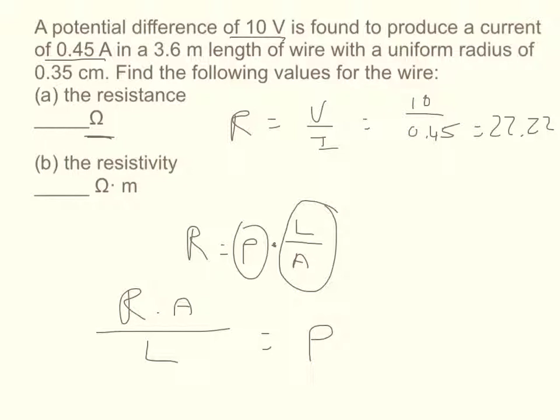Our value for the resistance is 22.22. The cross-sectional area is pi times radius squared, and the radius it says is 0.35 centimeters, but we have to have that in units of meters, so 0.35 times 10 to the negative 2.